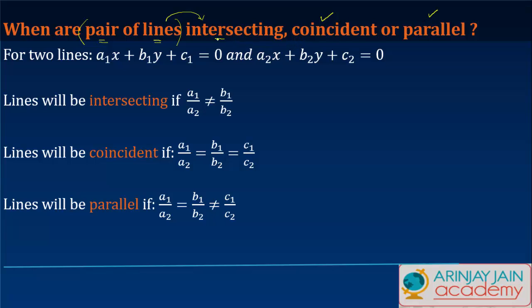In order to find out when these lines are intersecting, coincident, or parallel, let's say you have the equation of two lines: a1x + b1y + c1 = 0, where x and y are the variables, a1 and b1 are the coefficients, and c1 is a real number. The second line is a2x + b2y + c2 = 0.